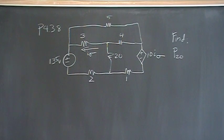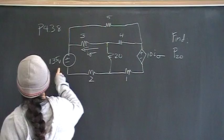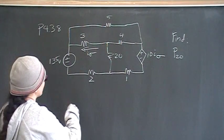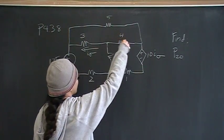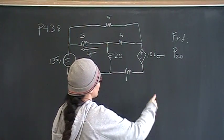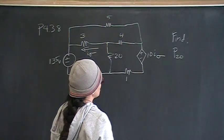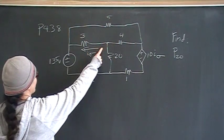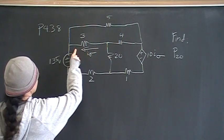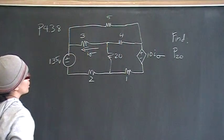And in this problem, we have a 135 volt independent voltage source. This is 3 ohms, 2, 20, 1, 4, and 5. And we have a dependent voltage source with value 10 I delta. And its value is controlled by the current through this I delta, which is the current through the 3 ohm resistor.